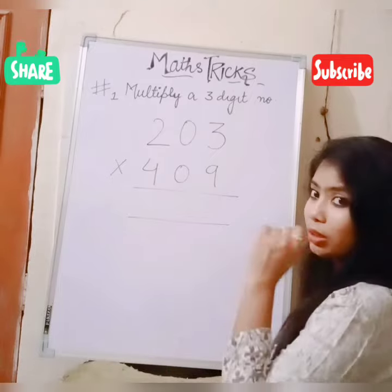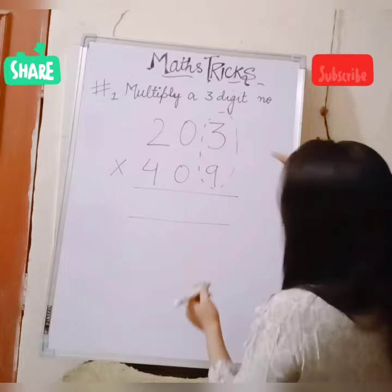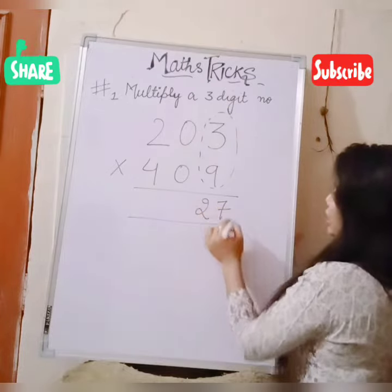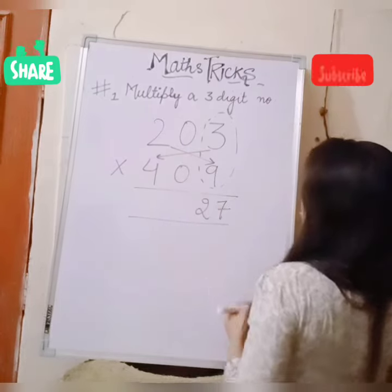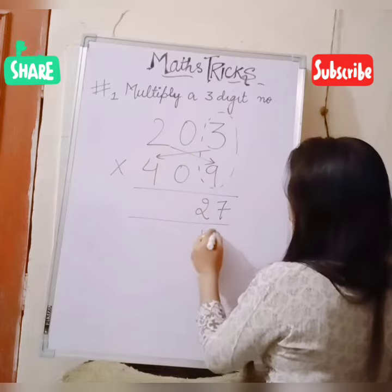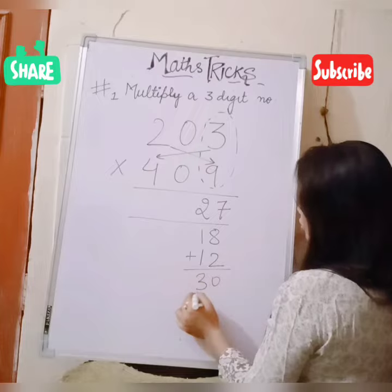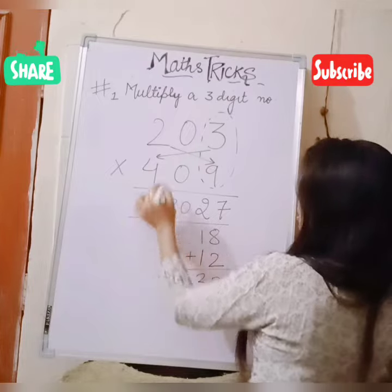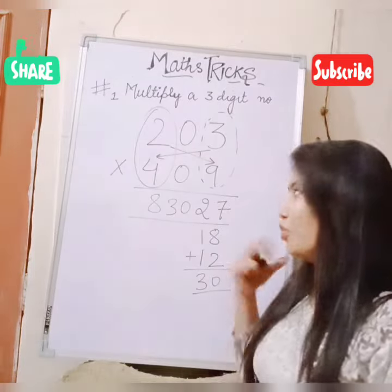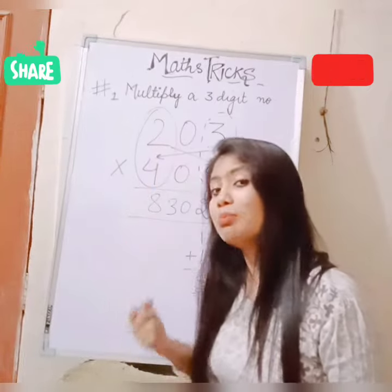So first, step 1: multiply the last digits — 9 times 3 is 27. Then cross the corner digits: 9 times 4 is 18, and 4 times 3 is 12. Add both: 18 plus 12 is 30. Then multiply the first digits: 4 times 2 is 8. So you can see — within 5 seconds, how I have multiplied these digits.